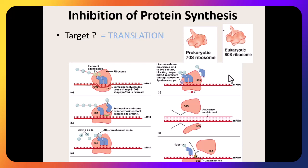Another class of drugs inhibits protein synthesis. Proteins are made through transcription and translation. These drugs specifically target the translation step — they target the ribosome that reads messenger RNA to assemble amino acids into proteins.